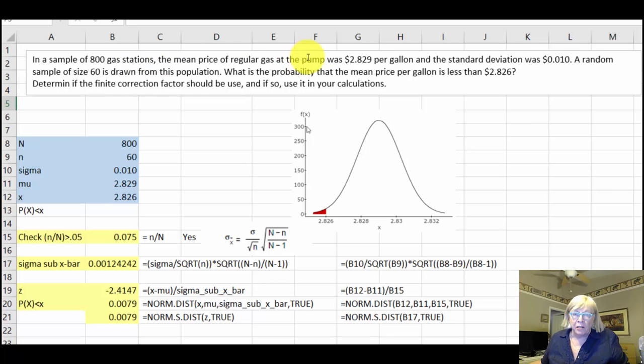The problem is about a sample of 800 gas stations. In that sample of 800 gas stations, the mean price of the gas was $2.829 per gallon with a standard deviation of one penny (0.010). Then from those 800 stations, they took a random sample. Some problems won't be that obvious, but what they're saying is now we've switched things: this original sample of 800 stations is now our population.